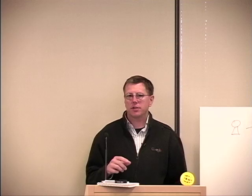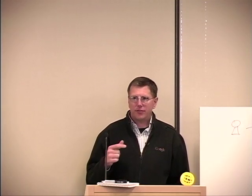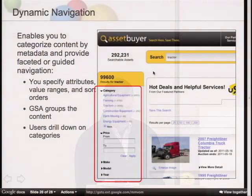What I'd like to do is take that to the next step now and configure some dynamic navigation. You'll specify the attributes, value ranges, and sort orders, and the search appliance will automatically group the content based on its metadata. Then users will drill down on the categories based on which values they like. This provides for a much faster or more guided search — sometimes people refer to this as guided, dynamic, or faceted search.